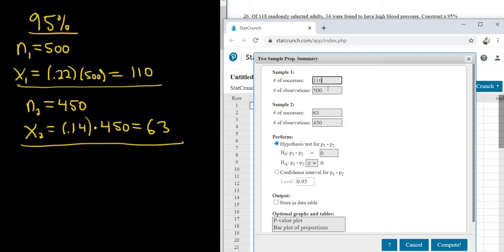So 110, 500, 63, 450. And it's 95% confidence interval, and everything looks okay. I'm going to go ahead and hit Compute.